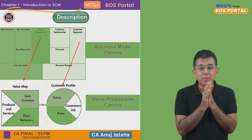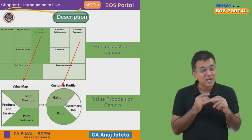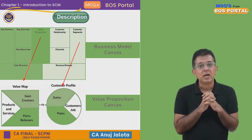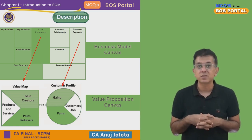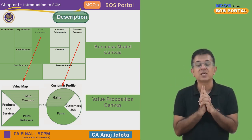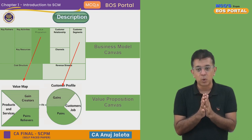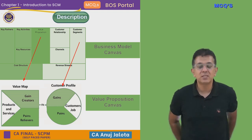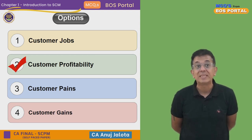Then there is the value map — what a business will offer through its products and services. They ensure that pains get relieved, and there will be some gains that a business creates, called gain creators. These are the parts of the Value Proposition Canvas. Customer profitability is never part of it — the canvas is all about why a consumer will buy your product. Therefore, the correct answer is the second option: customer profitability.